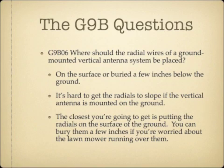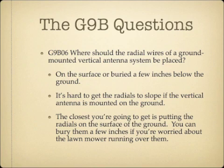Where should the radial wires of a ground-mounted vertical antenna system be placed? The answer is on the surface or buried a few inches below the ground. It's hard to slope radials when the antenna is ground-mounted. You want as little interference as possible between the vertical antenna and its radials, so place them on the surface. You can bury them a few inches if you're worried about the lawnmower or other hazards, but keep them at or just below the surface.